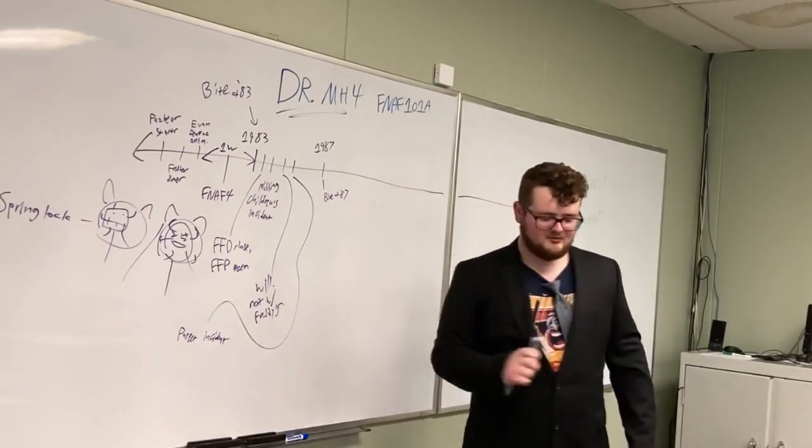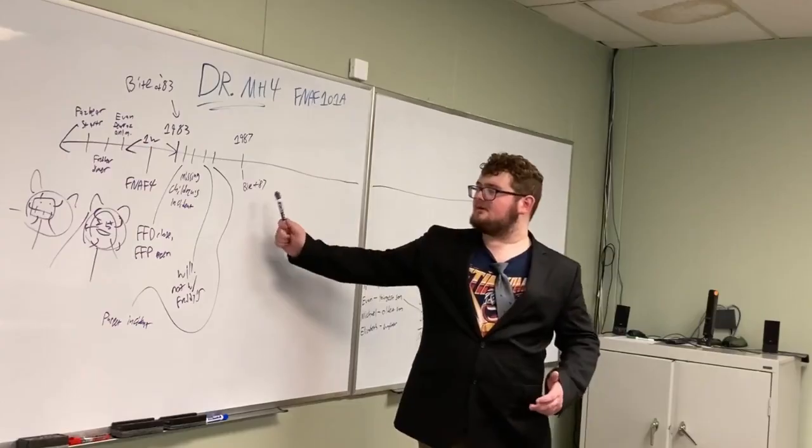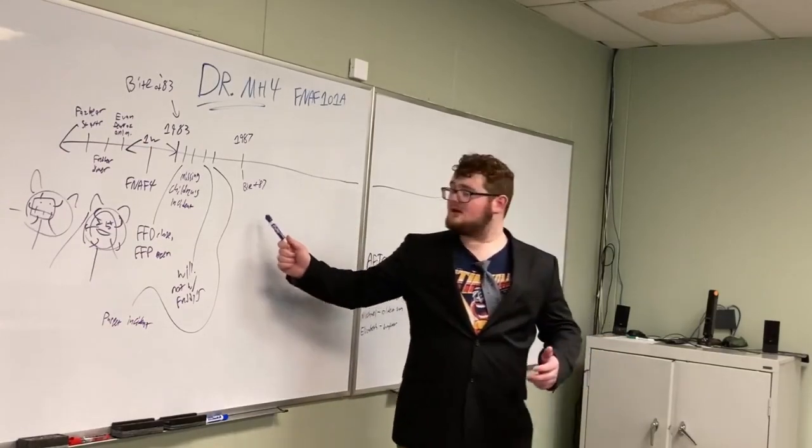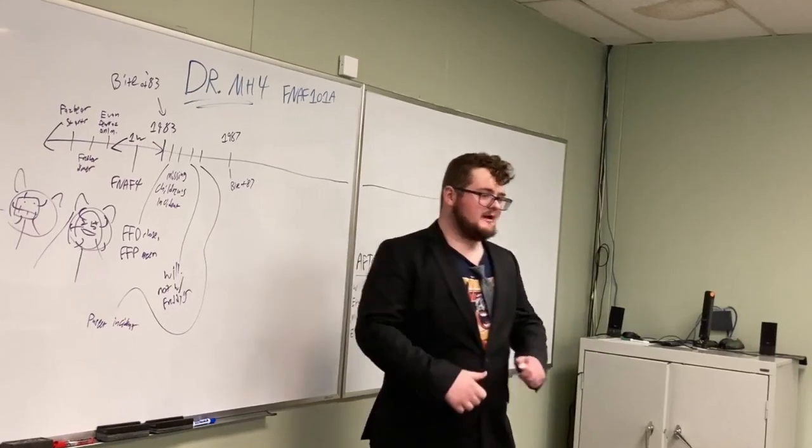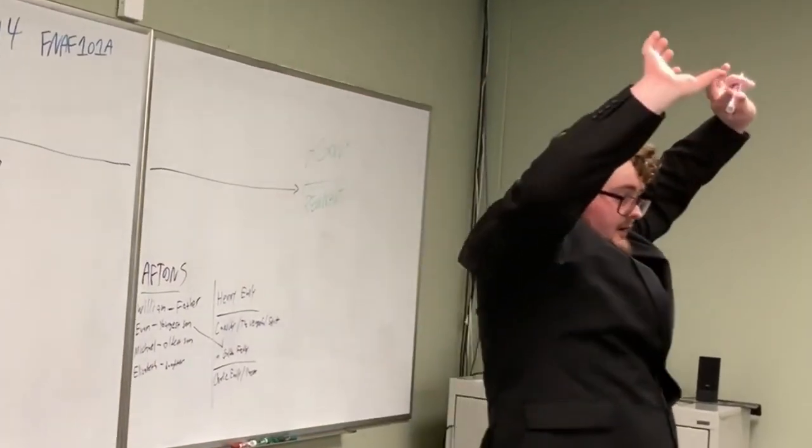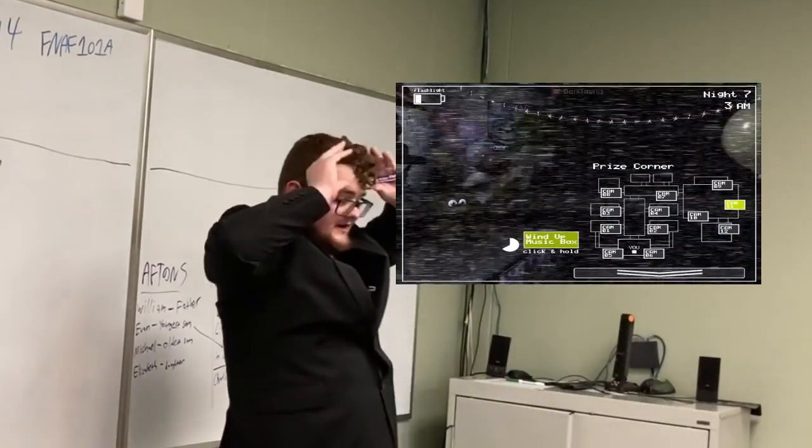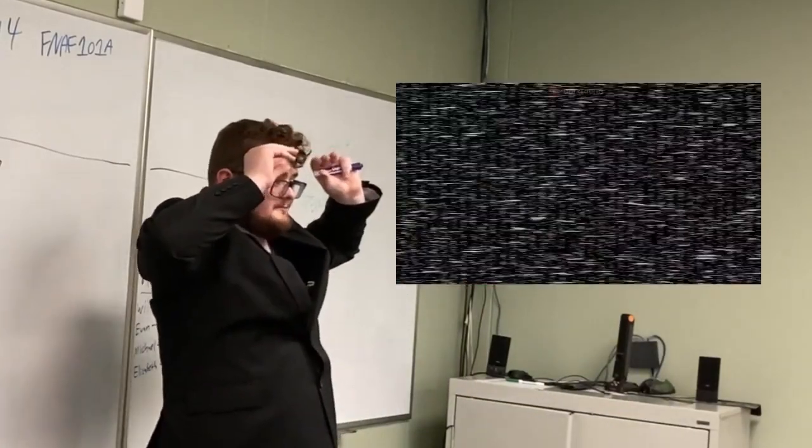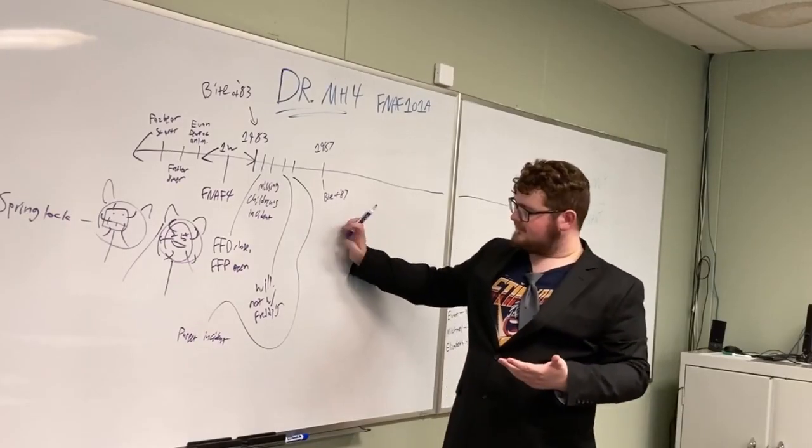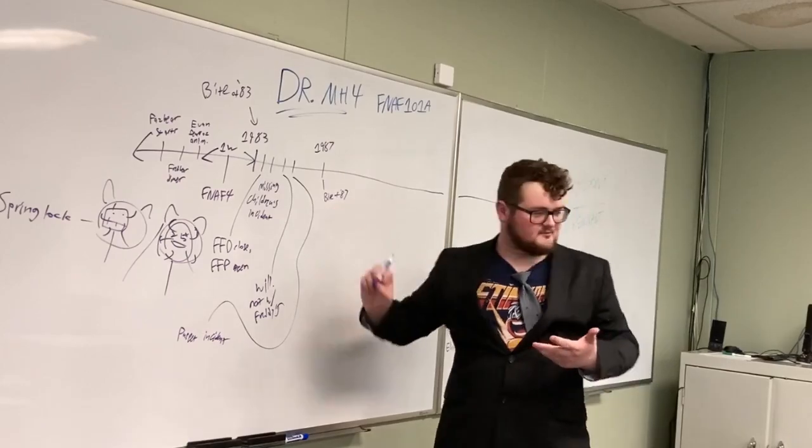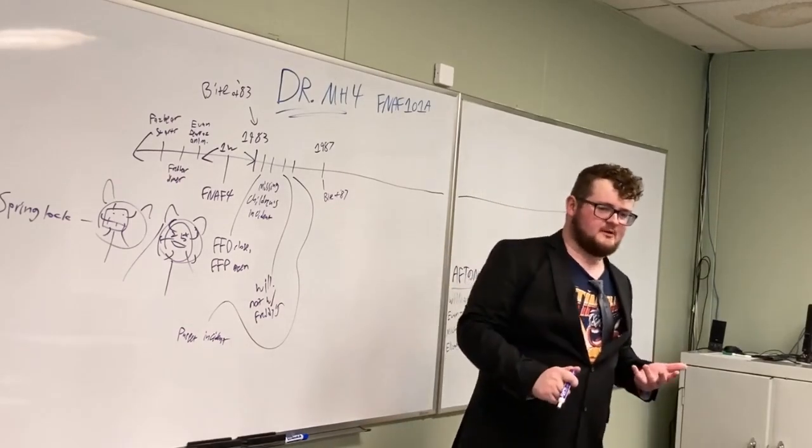Bite of 87 isn't super duper important to what we have going on. What happens is, in one of the locations, there's an animatronic called Mangle. People aren't 100% sure who did the Bite of 87, but it is most likely Mangle, because in Five Nights at Freddy's 2, Mangle's jump scare has her coming down from the ceiling, and looking like biting the player character's frontal lobe.